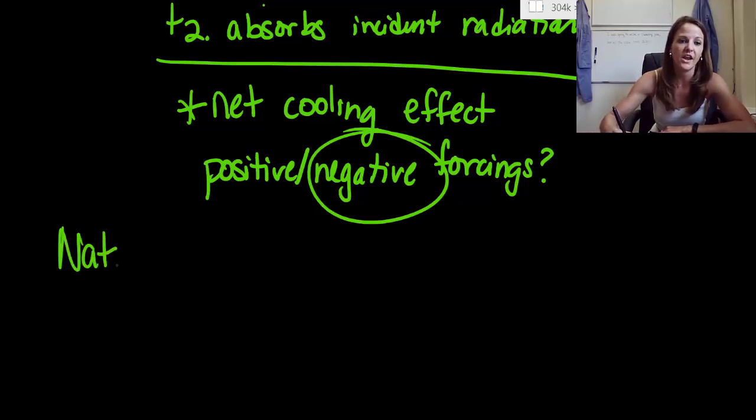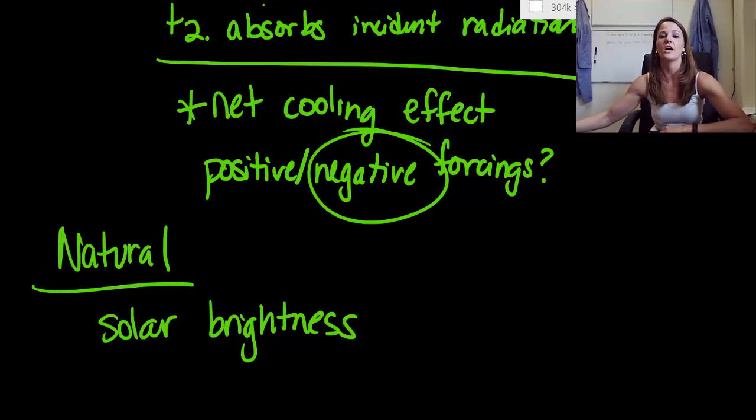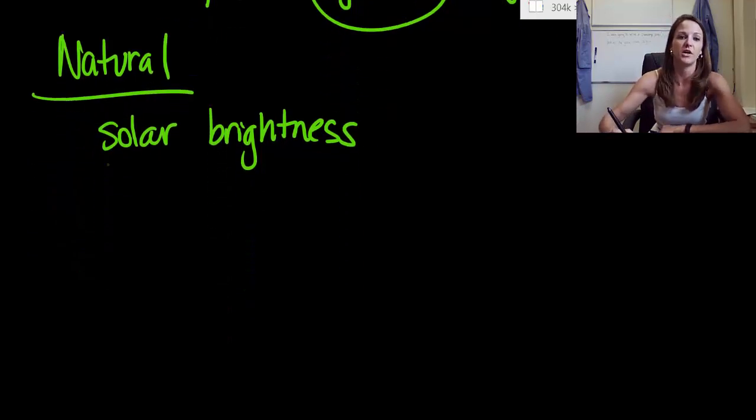So we're going to end this segment with just the last source, and it's actually our only natural source. And so for this one, we basically talk about our solar brightness. So how bright is the sun? And so we've talked about this a million times before, so we're just going to punch through this really fast.